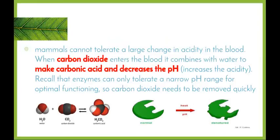Mammals cannot tolerate a change in the acidity in the blood. When the carbon dioxide enters the blood, it combines with water to make carbonic acid and decreases the pH, which obviously leads to an increase in the acidity. We recall that enzymes can only tolerate a narrow pH range for optimal functioning, and that depends on where in the body the enzyme works. So if the enzyme works in the stomach, it will be able to already withstand a fairly low pH, but if that pH decreases further, then it will begin to denature.